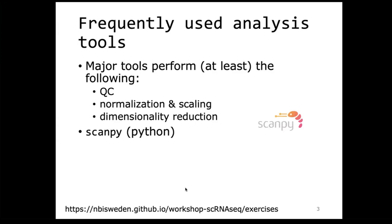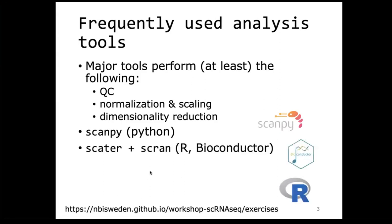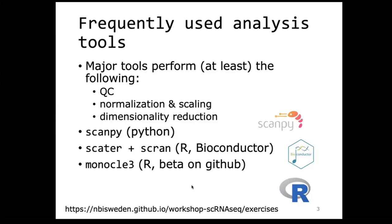In Python, the most popular tool is ScanPy. We won't be looking into that in this course, but there are many very nice tutorials online. If you are working in the Bioconductor universe, you would typically work with Scater and Scran to do your analysis within R. An alternative to that is Monocle 3, which also does a lot of similar things, but is not on Bioconductor or CRAN — it's only installable through GitHub.